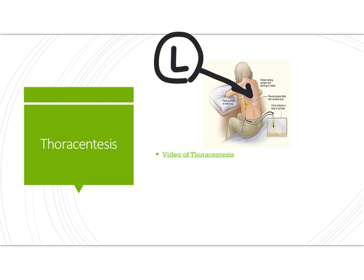The best positioning for a patient having a thoracentesis is sitting and leaning over a bedside table. This allows the fluid to collect in the lower pleural space, making it easier to obtain. The patient is awake, receives no sedation, is given local numbing medicine, and then a large-bore needle is introduced between the ribs into the pleural space to drain the fluid, which is sent to pathology for analysis.